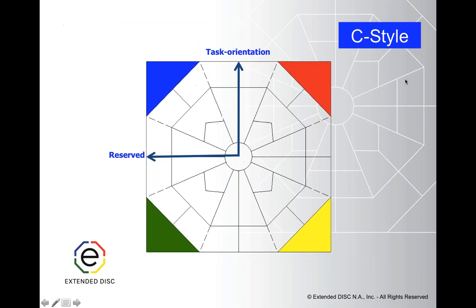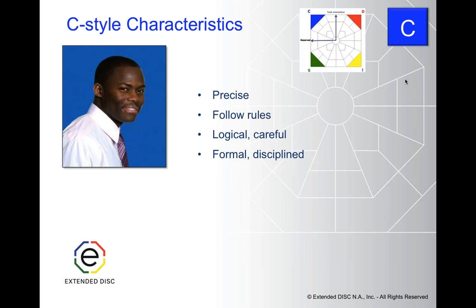So let's go on to the final one, which is the C style. They are task-oriented like the D style; however, they are more reserved. To distinguish them: they want to get from point A to point B, just like the D style does, but they're going to be more focused on what happens between A and B. If A point 1, A point 2, A point 3 is not correct, they may never get to point B.